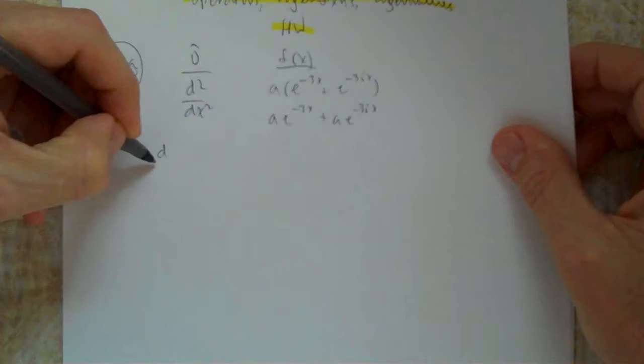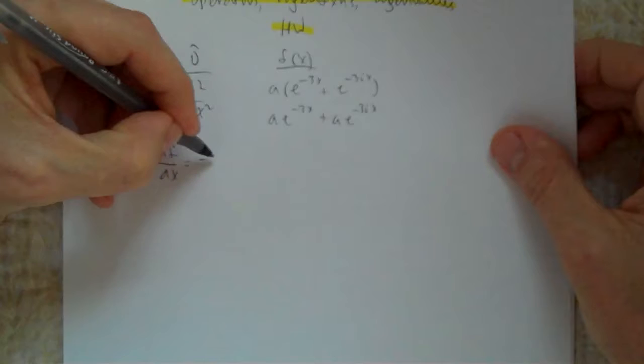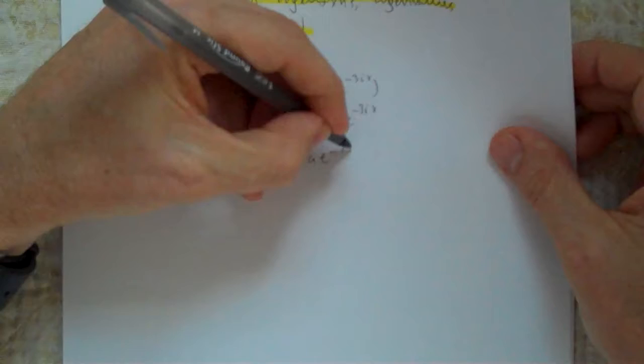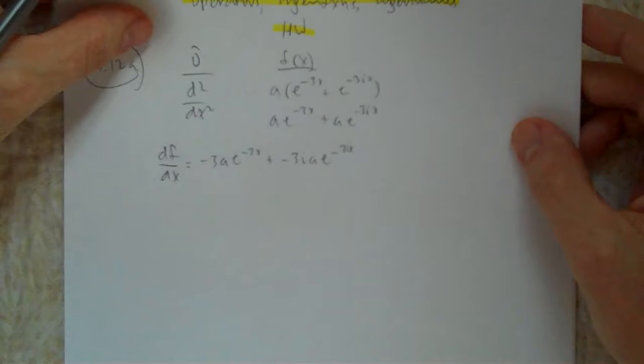df/dx is equal to minus 3i times A e to the minus 3ix. I used u-substitution to get that.